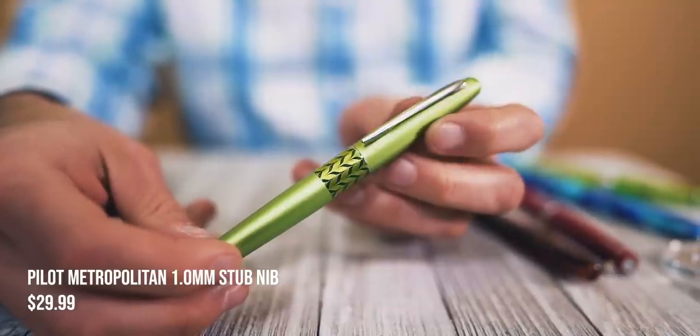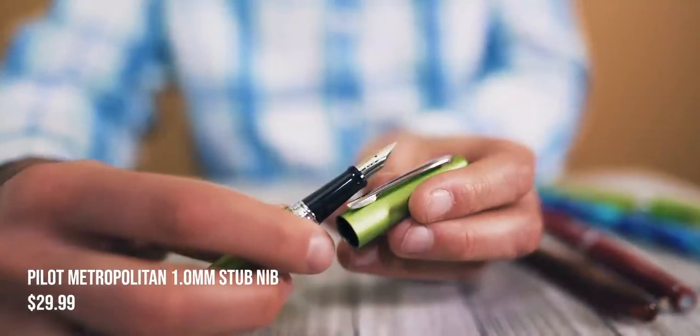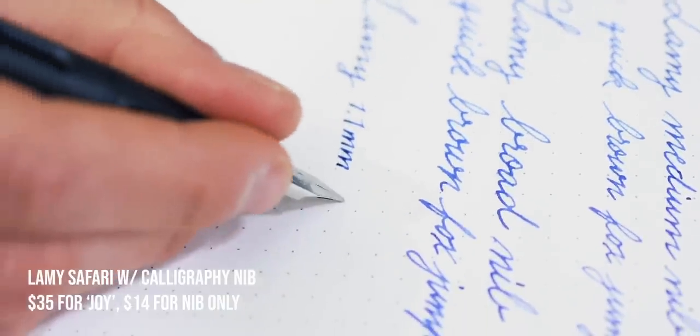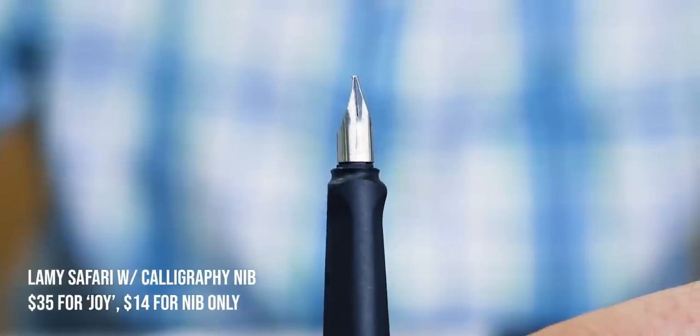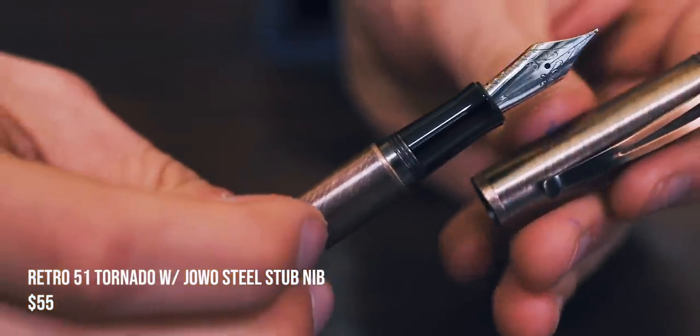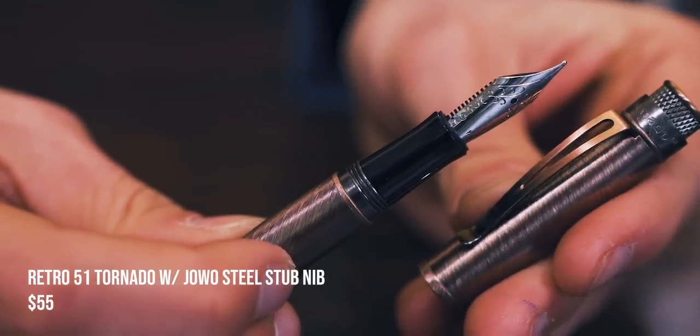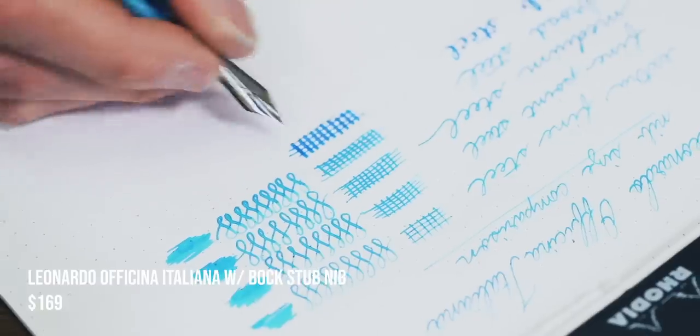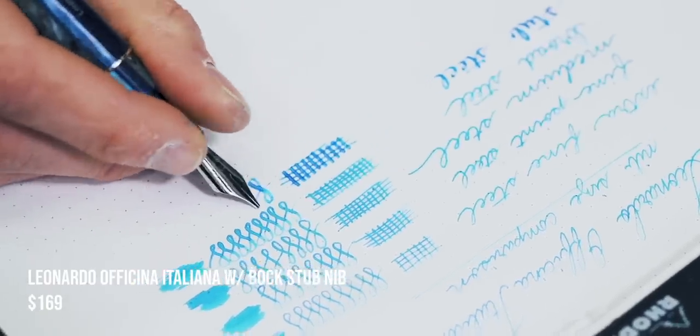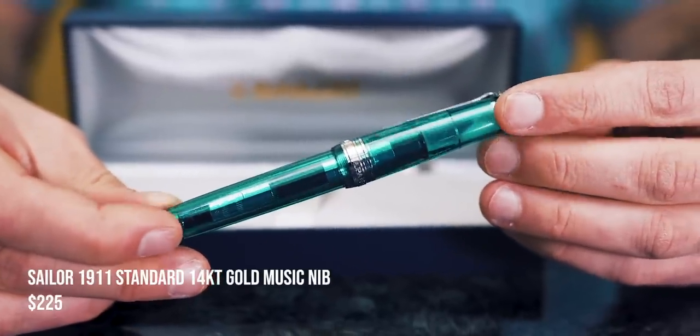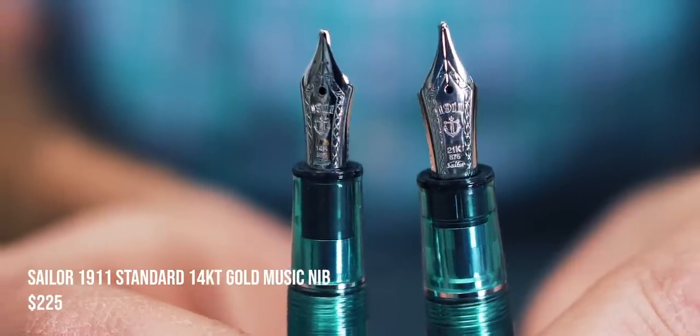Number one, Pilot Metropolitan with a 1.0 millimeter stub nib. Number two, a Lamy Safari with a calligraphy nib. Number three, a Retro 51 Tornado with the Yovo stainless steel stub nib. Number four, a Leonardo Officina Italiana fountain pen with a box stub nib. Number five, a Sailor 1911 standard with a 14 karat gold music nib.